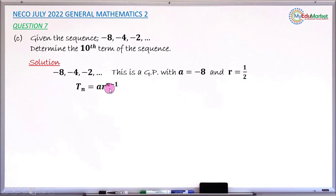Now substitute: A = -8, R = 1/2, and n = 10, because we're finding the 10th term.